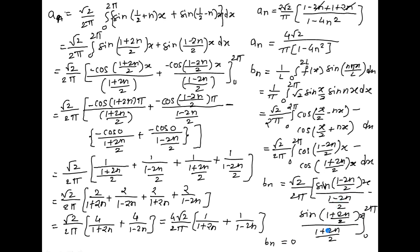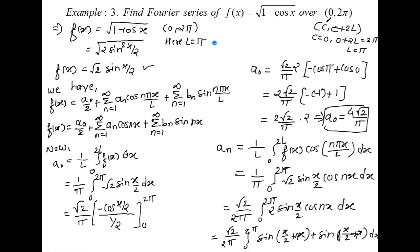So I hope this example is clear. Now the values of A0, An, and Bn have to be substituted into the Fourier series. A0 = 4√2/π, An = 4√2/(π(1−4n²)), Bn = 0. Substituting these gives the required Fourier series for f(x) = √(1 − cos x) over 0 to 2π. Thank you for watching the video. Don't forget to subscribe the channel.